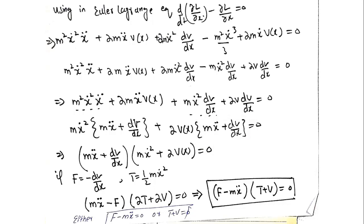This is equal to zero. Using the factorization rule I can write m x double dot plus dv by dx times m x dot square plus 2v of x is equal to zero.